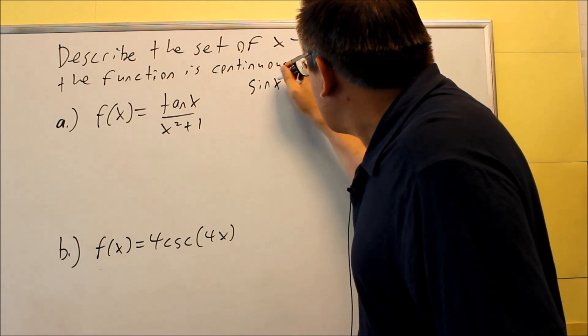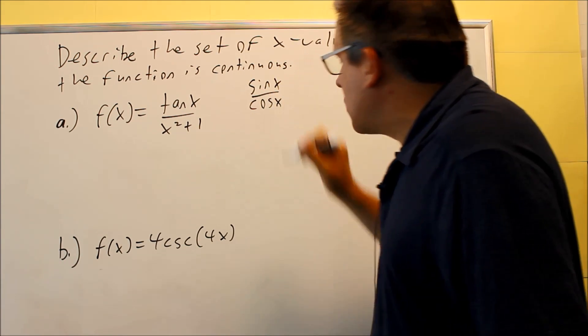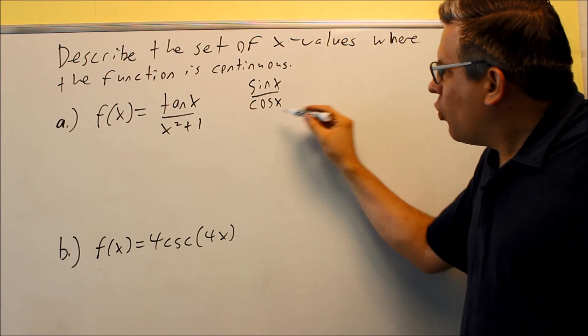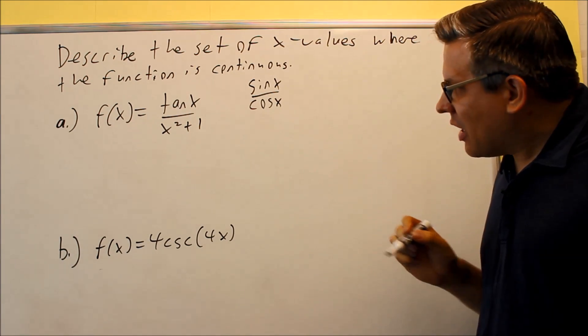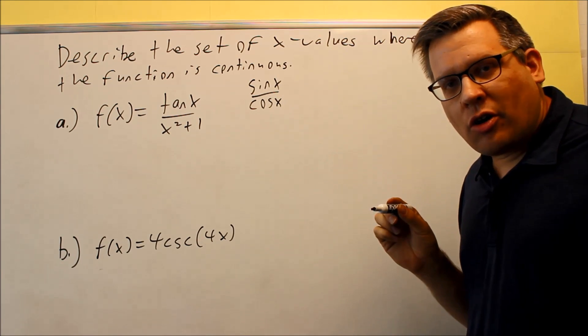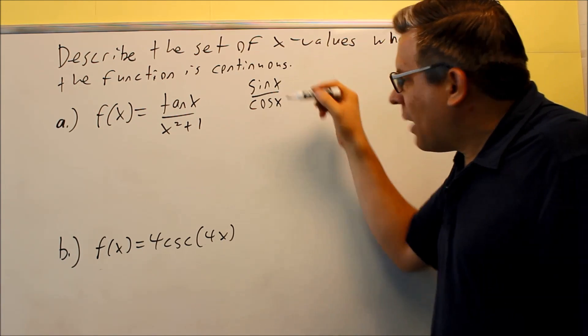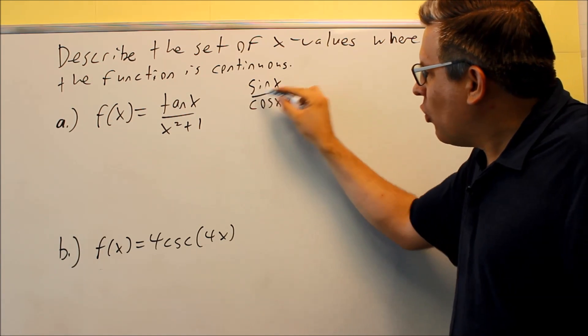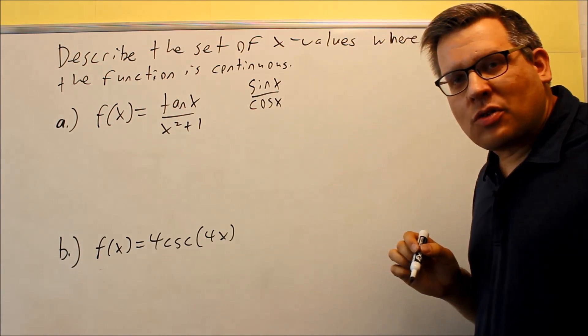Now tangent, I probably would want to write this as sine x over cosine x because that way I can form a fraction and I can see what makes the bottom equal to zero. In this case, any time the cosine x equals zero, that's a place where I'm going to be dividing by zero and it's not going to be continuous there. So I've got to find out what angles will give me a zero on the bottom.